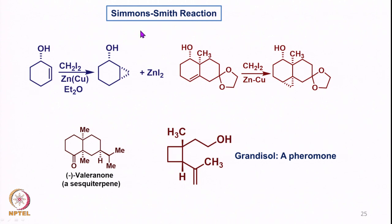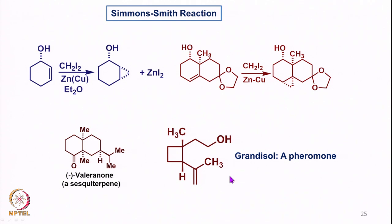In the end we looked at the Simmons-Smith reaction to form a cyclopropane ring — a C-C bond formation using diiodomethane and a zinc-copper couple in ether. This gives the cyclopropane where the geometry mirrors that of the hydroxy group. Likewise, for a homoallyl alcohol, we also got the corresponding cyclopropane with similar geometry relative to the carbon-hydroxy bond. The utility of such Simmons-Smith cyclopropanation was also used to prepare natural products, and was applied to the synthesis of the pheromone grandisol using cyclopropane-based chemistry.